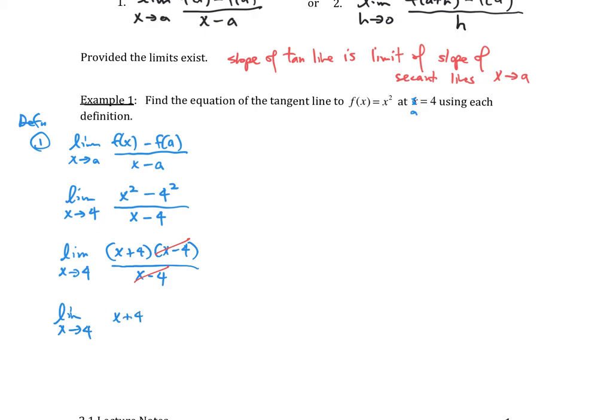At this point, because we've eliminated the zero in the denominator, we can just plug in the value of 4 for x, and this is going to give us 8. So this is the slope of the tangent line.